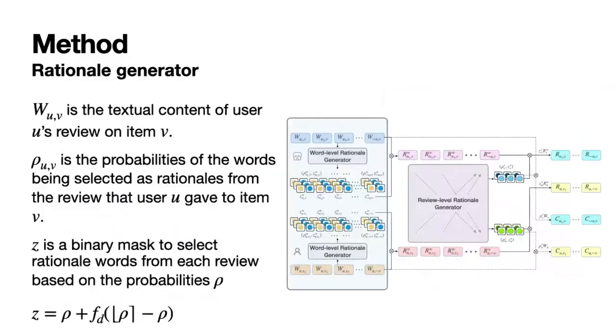Specifically, in the word-level Rationale Generator, we pass the historical reviews of user U and item V into the text processor and use the features obtained by the text processor to calculate the probability of each word being rational. And Z is the binary mask to select rational words from each review based on the probabilities. It is calculated as follows, where FD is a detached function indicating that no gradients are needed.